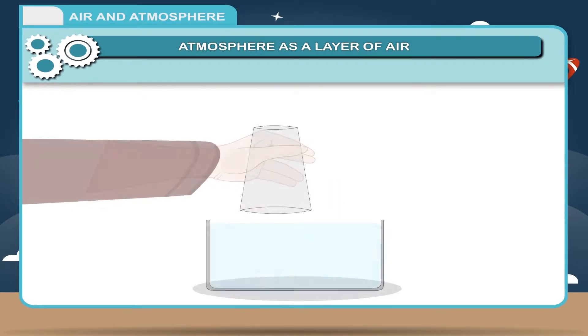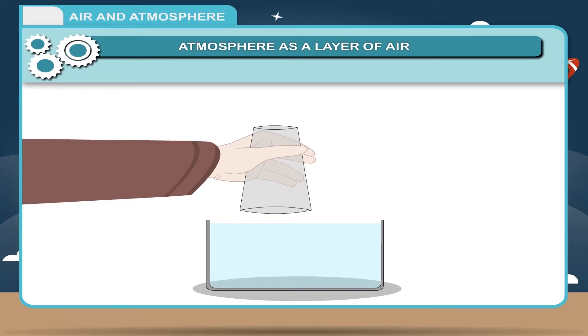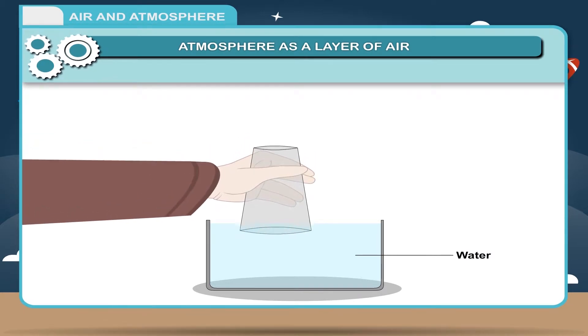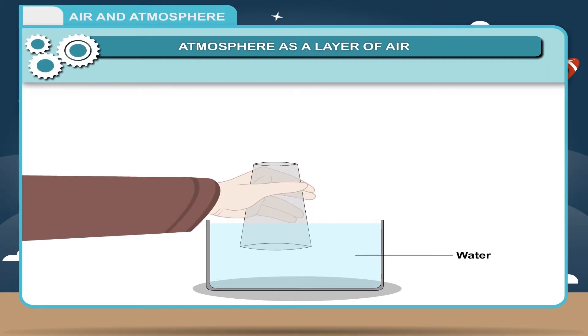Activity. Take an empty tumbler and a tub of water. Ensure that nothing is inside the tumbler. Invert the tumbler in a tilted position into the tub.